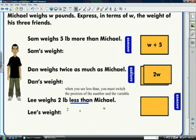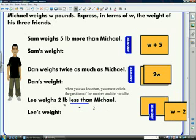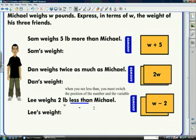Now this next one. When you see less than, you must switch the position of the number and the variable in the problem. Otherwise, you'll have some tremendous wrong answers. So this problem is telling us that Lee weighs 2 pounds less than Michael. All you really have to think about doing is taking Michael and putting him in front of the less than and taking the 2 pounds and moving him to the back. It would sort of be like what I'm going to do down here with the w. I'm going to put the w in front of the less than and the 2 after the subtraction sign. Now we see w minus 2. Let's check that answer. There you go.